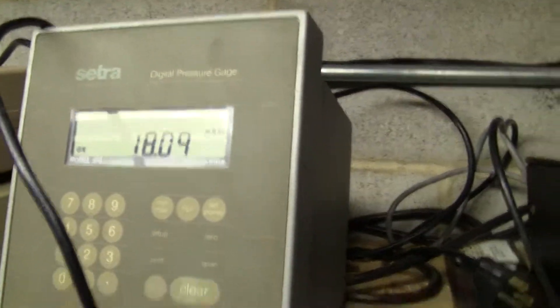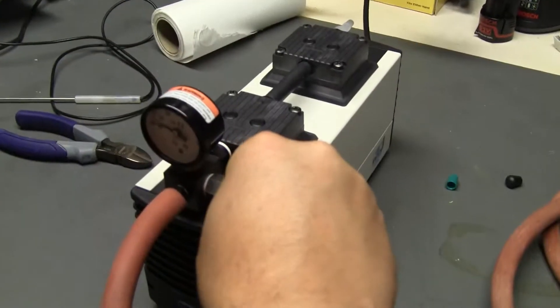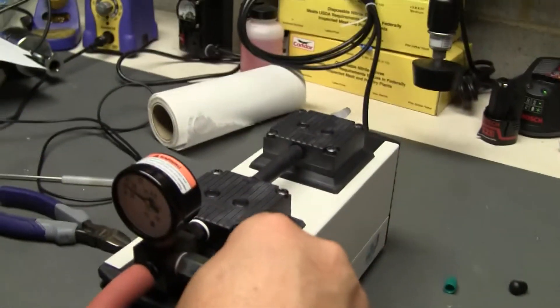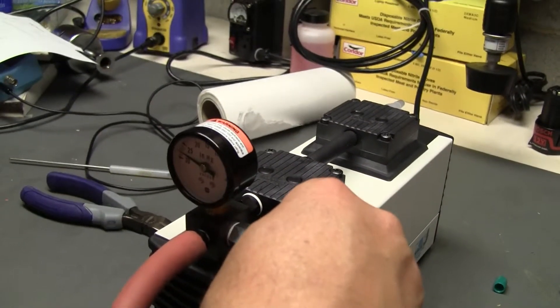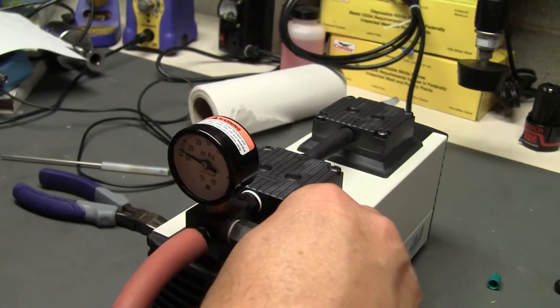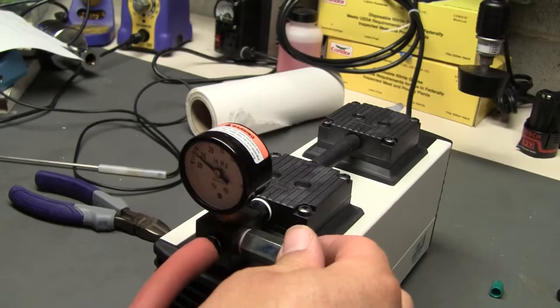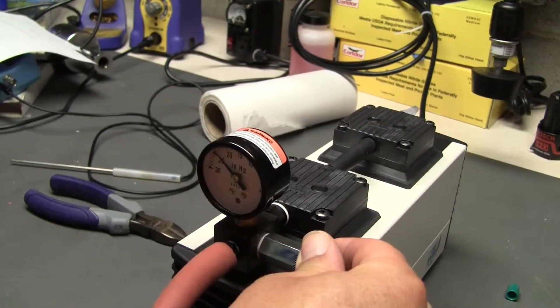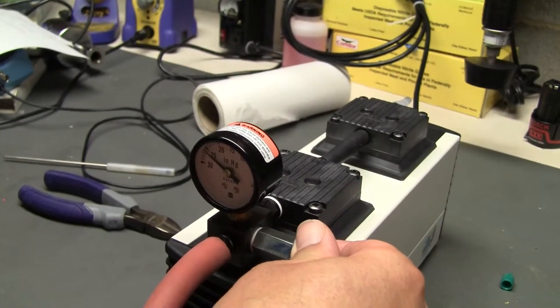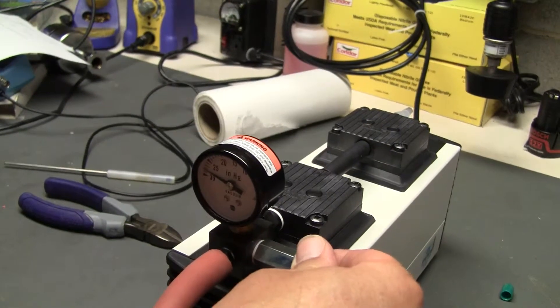Once again, it has this nice little adjustable gauge on it, which is nice. Gauge is actually in inches of mercury. If you have any further questions, please don't hesitate to call 609-518-9100.